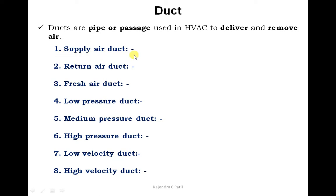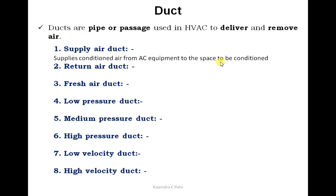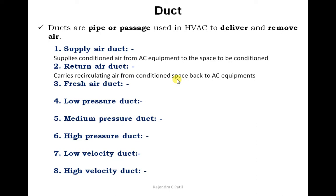A supply air duct supplies conditioned air from AC equipment to the space being conditioned. A return air duct carries recirculating air from the conditioned space back to the AC equipment. A fresh air duct carries outside air — that is, atmospheric air — to the AC equipment for further processing.